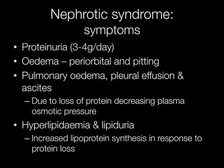Symptoms of nephrotic syndrome include proteinuria; edema, which may be periorbital and pitting, and also pulmonary edema, pleural effusion, and ascites; and hyperlipidemia and lipiduria. Hyperlipidemia and lipiduria are caused by an increase in lipoprotein synthesis in response to protein loss.